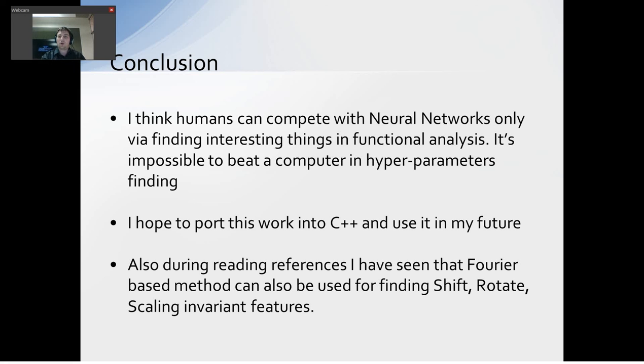I think humans can compete with neural networks only via finding interesting things in functional analysis. It's impossible to beat a computer in hyperparameter finding. I hope to put this work into C++. Also, during reading references, I have seen that Fourier-based methods can also be used for finding shift-rotate scaling invariant features. It's all. Thank you.